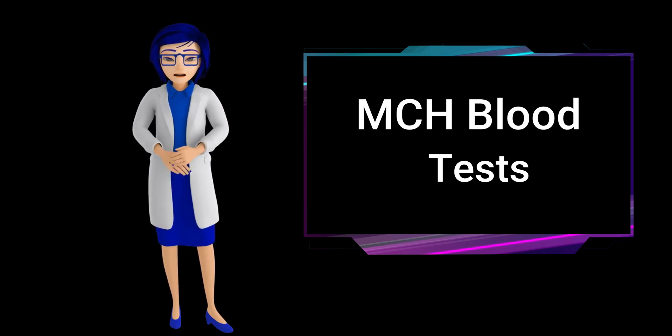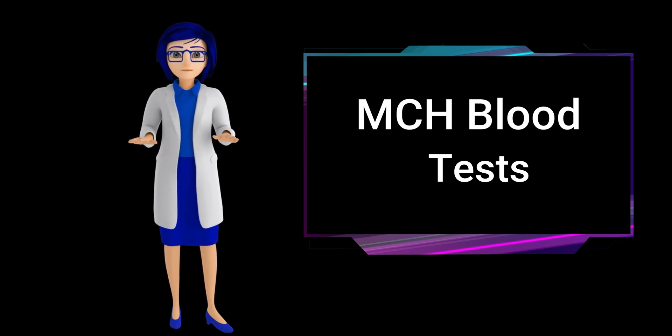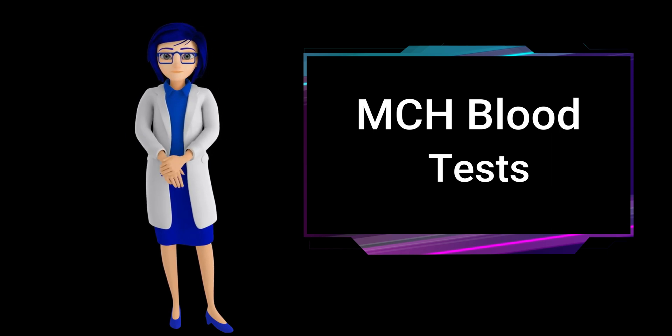Chronic blood loss can be caused by heavy menstrual bleeding, ulcers, or other conditions that cause ongoing blood loss.